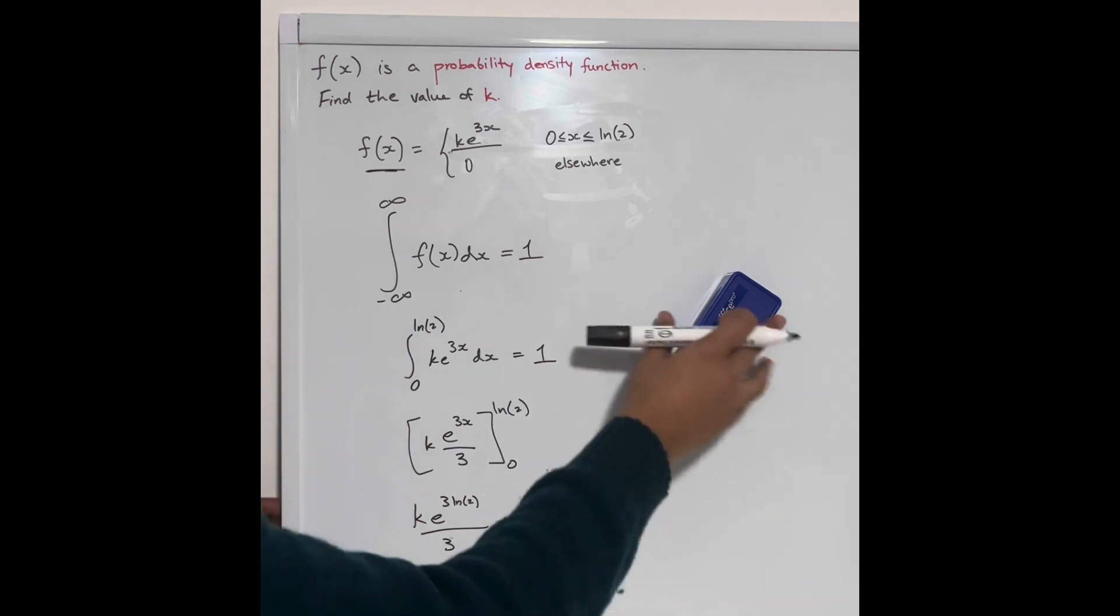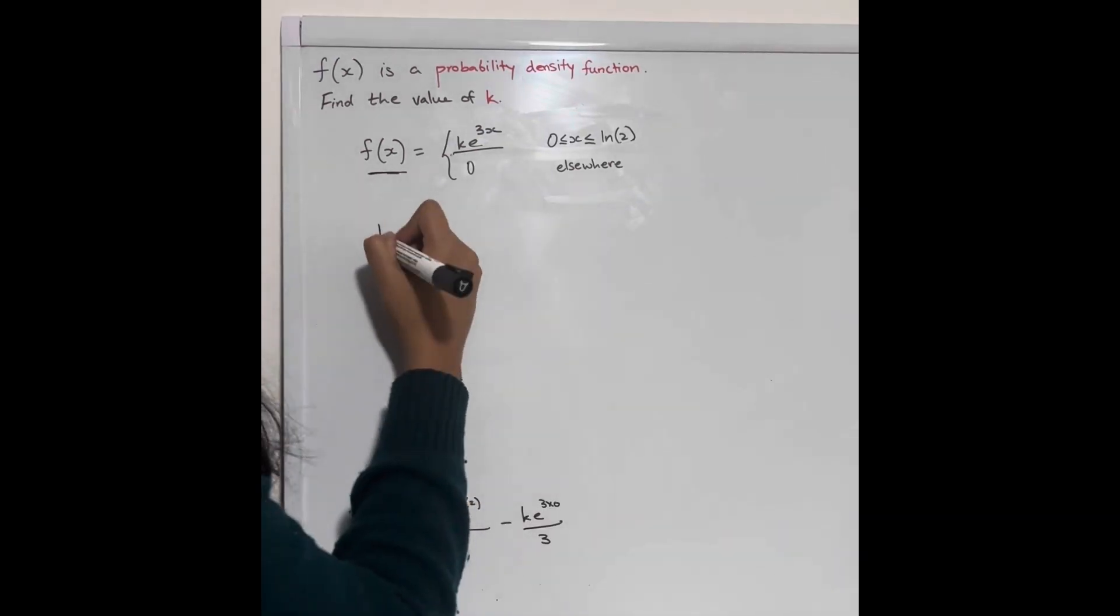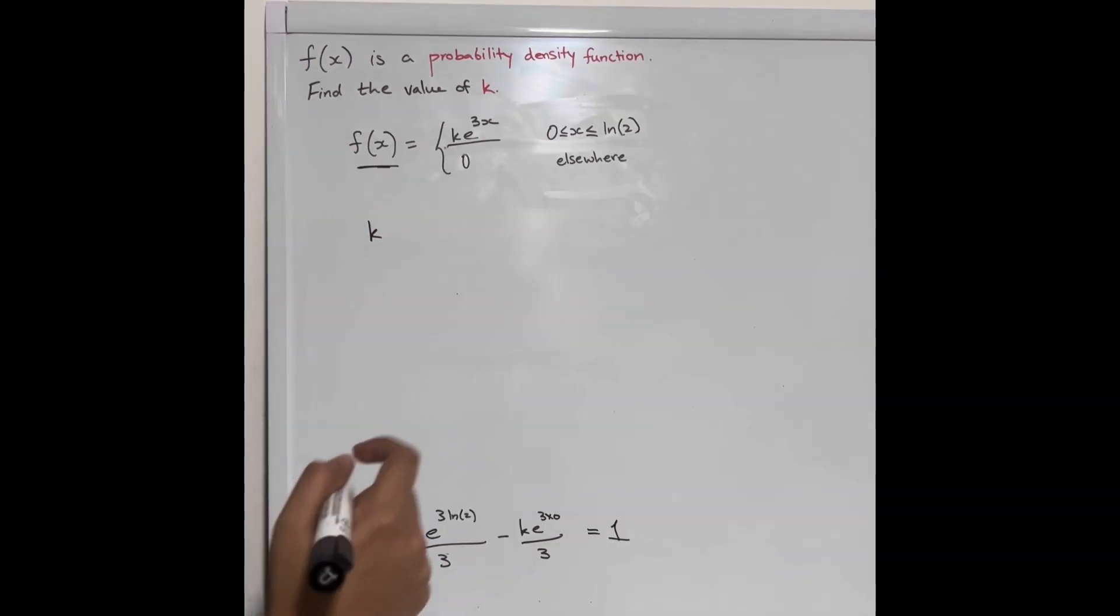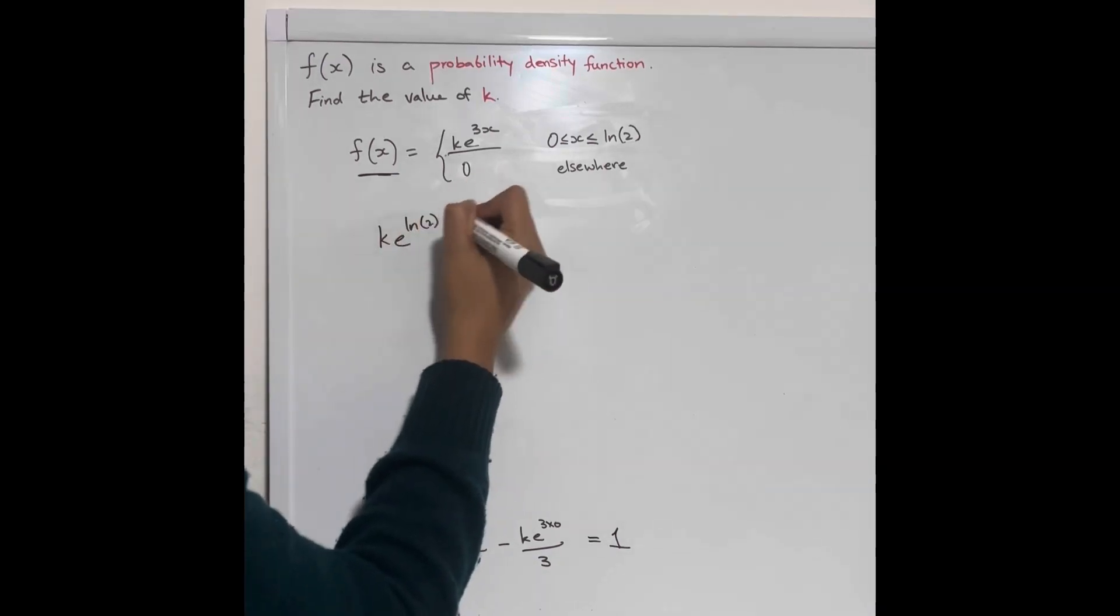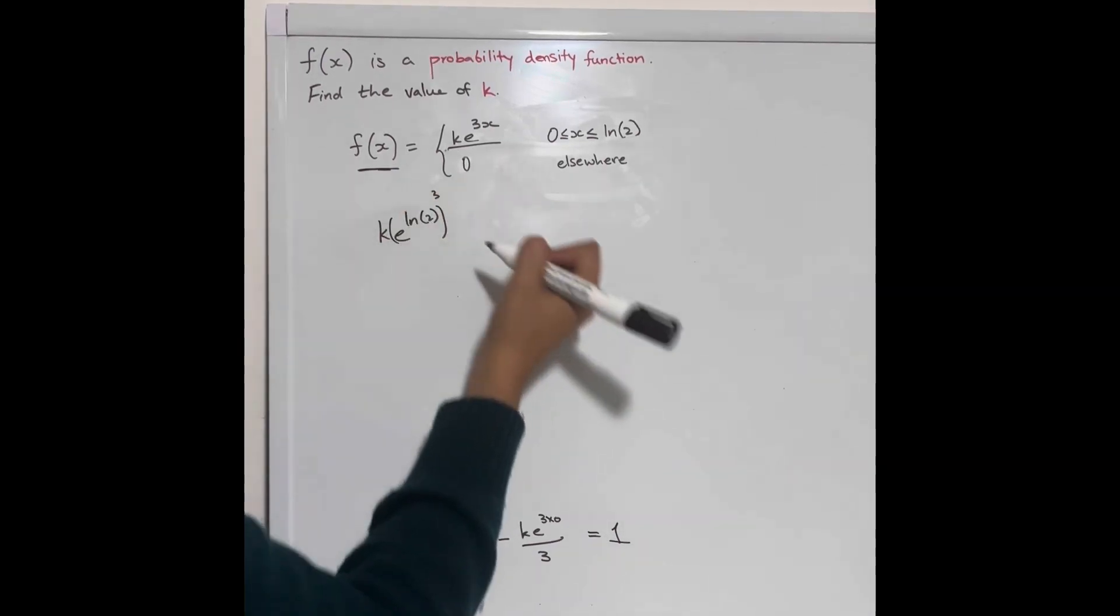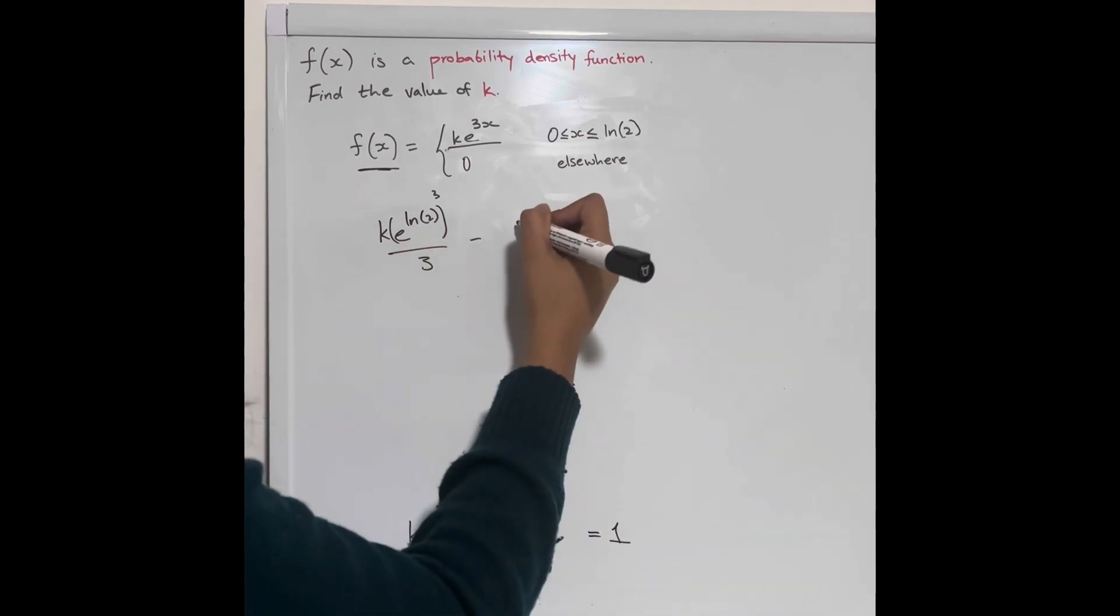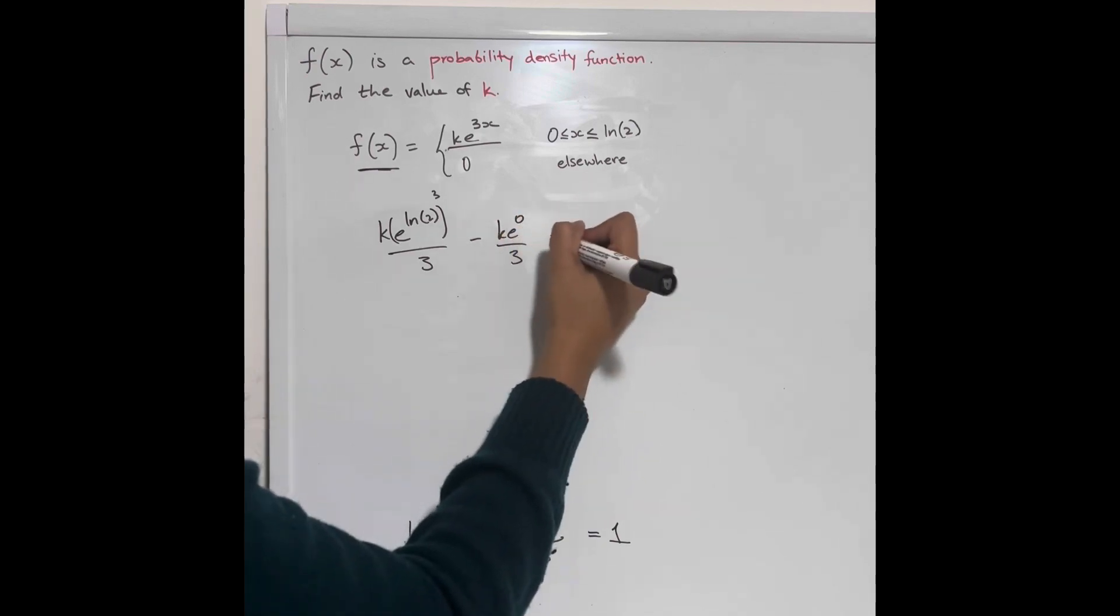Now that's going to be, if I make some space up here, and this will equal 1, remember, this is going to be k times e ln 2, all cubed, over 3 minus ke to the 0 over 3 equals 1.